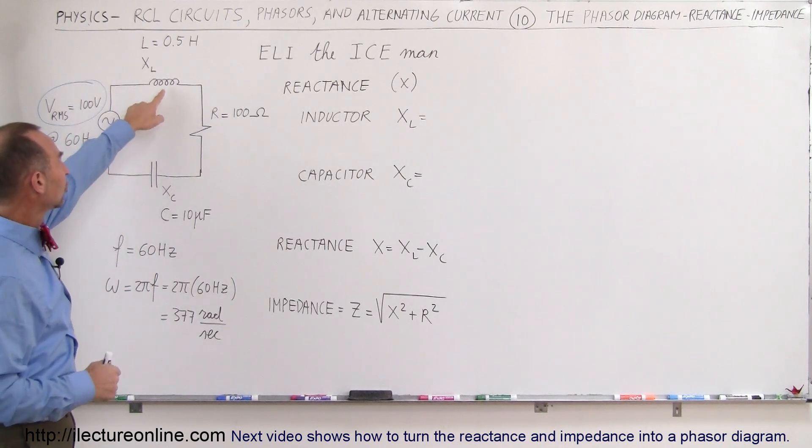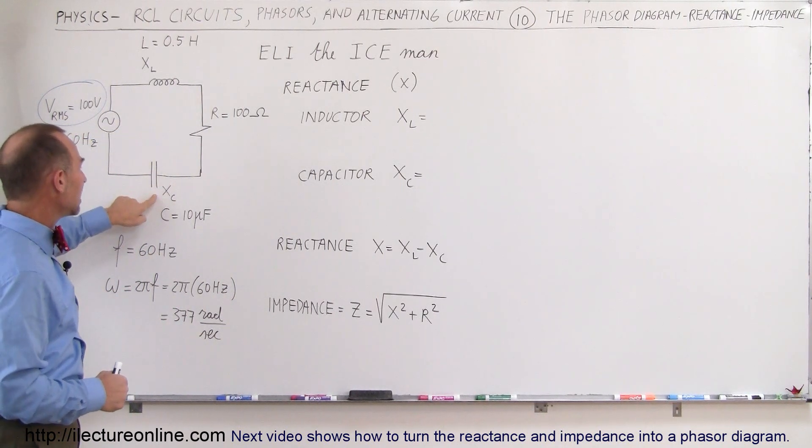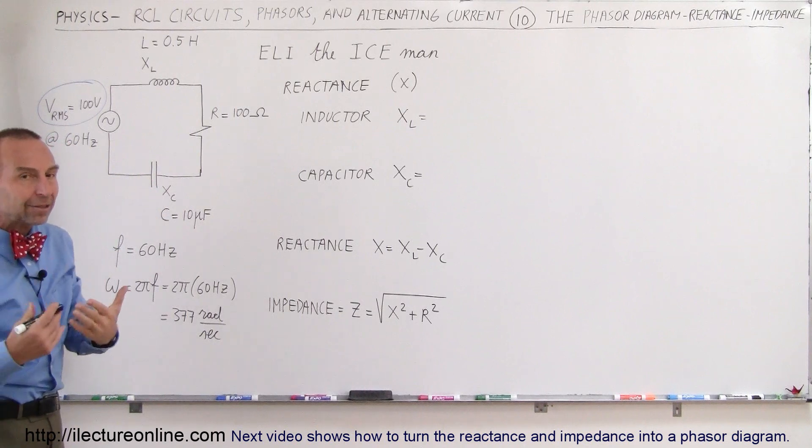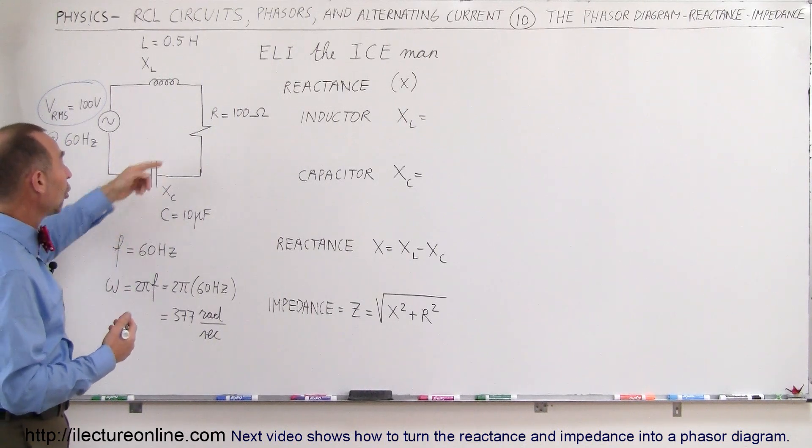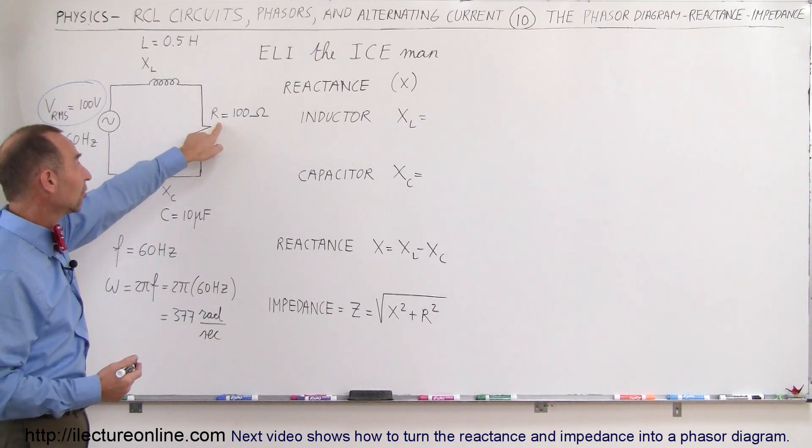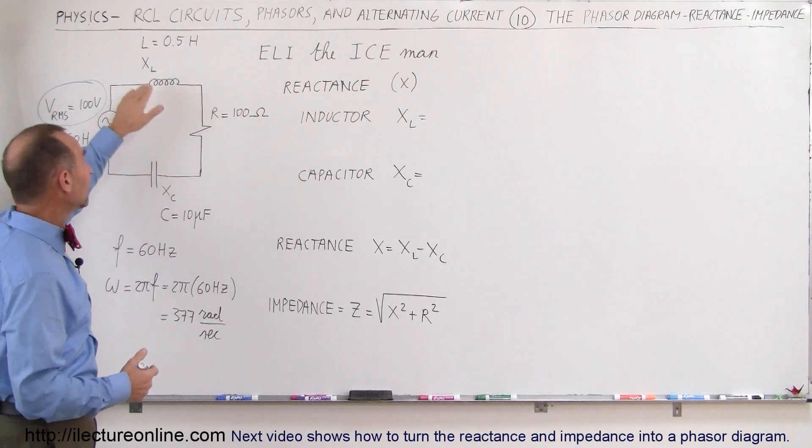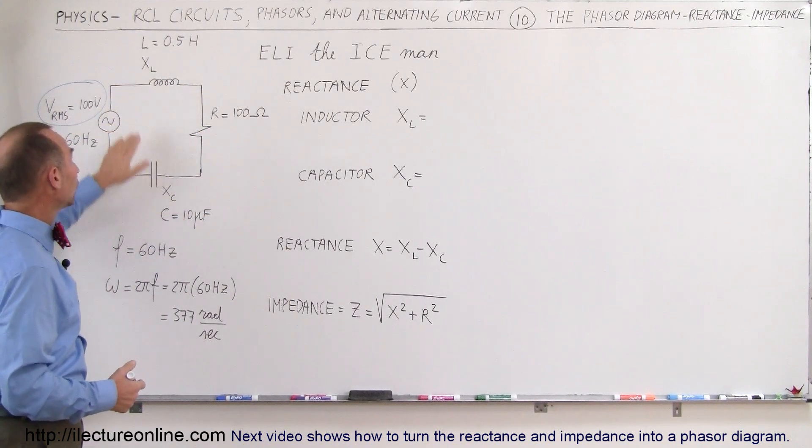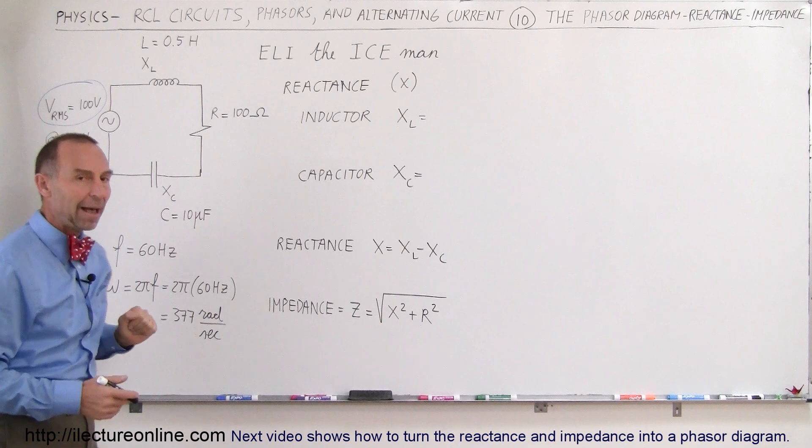So what is the opposition to the current for the inductor and for the capacitor? Well, we'll call that reactance. The units for reactance is ohms, just like for resistance. Let's say our resistor is a 100 ohm resistor. What is the opposition to the current in terms of ohms for the inductor and the capacitor?